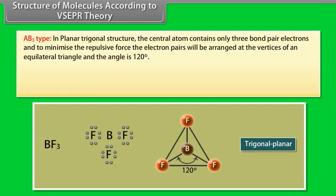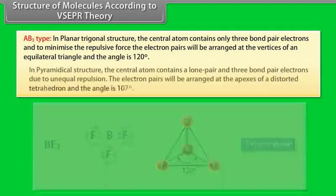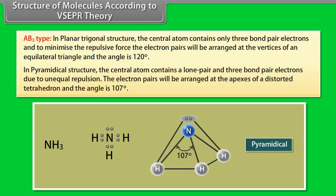AB3 type — planar trigonal structure: the central atom contains only three bond pair electrons and to minimize the repulsive force, the electron pairs are arranged at the vertices of an equilateral triangle at a 120-degree angle. In pyramidal structure, the central atom contains a lone pair and three bond pair electrons; due to unequal repulsion, the electron pairs are arranged at the apexes of a distorted tetrahedron at a 107-degree angle.